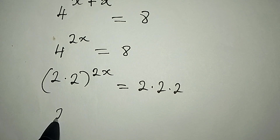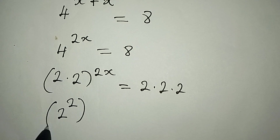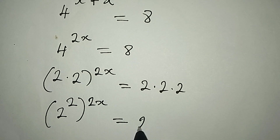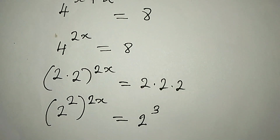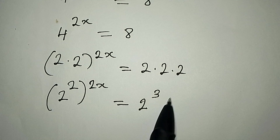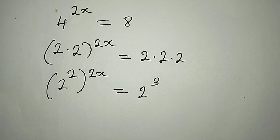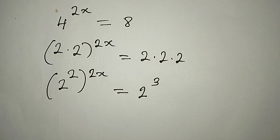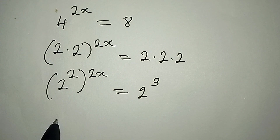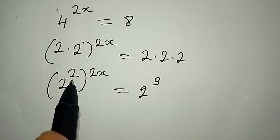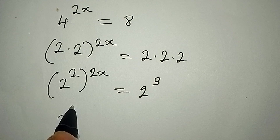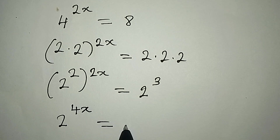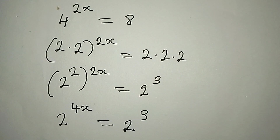Now we have 2 to the power of 2, then to the power of 2x. This is the same thing as 2 to the power of 3, meaning we have 2 in 3 places. If you have 2 powers, you can multiply them. So we have 2 to the power of 2 times 2x, which gives us 2 to the power of 4x, and this is equal to 2 to the power of 3.